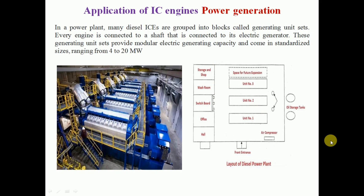In the diesel power plant, many diesel internal combustion engines are grouped into blocks called generating units. Every engine is connected to a shaft that is connected to its electric generator, and these generating units provide modular electric generating capacity, coming in standard sizes ranging from 4 to 20 megawatts.